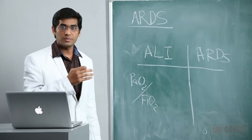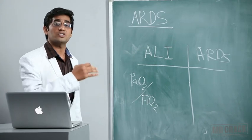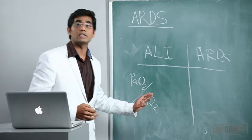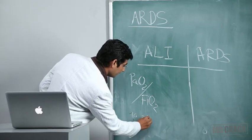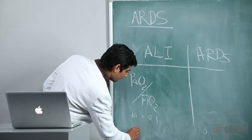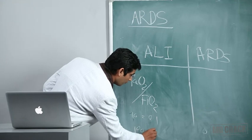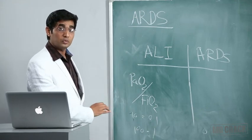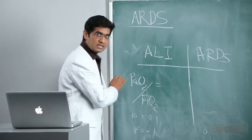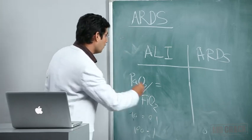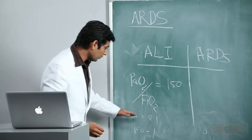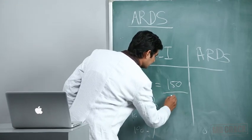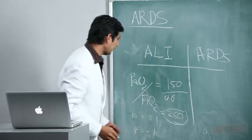PaO2 you can get from ABG, that is arterial blood gases. FiO2 is fractional inspiration O2, the percentage of oxygen you are giving to the patient. It ranges from 10% to 100%. Ten percent indicates FiO2 is 0.1, 100% indicates FiO2 is 1, and 50% indicates FiO2 is 0.5. If patient has PaO2 of 150 when you're giving FiO2 of 60, that is 0.6, the ratio will be 250.